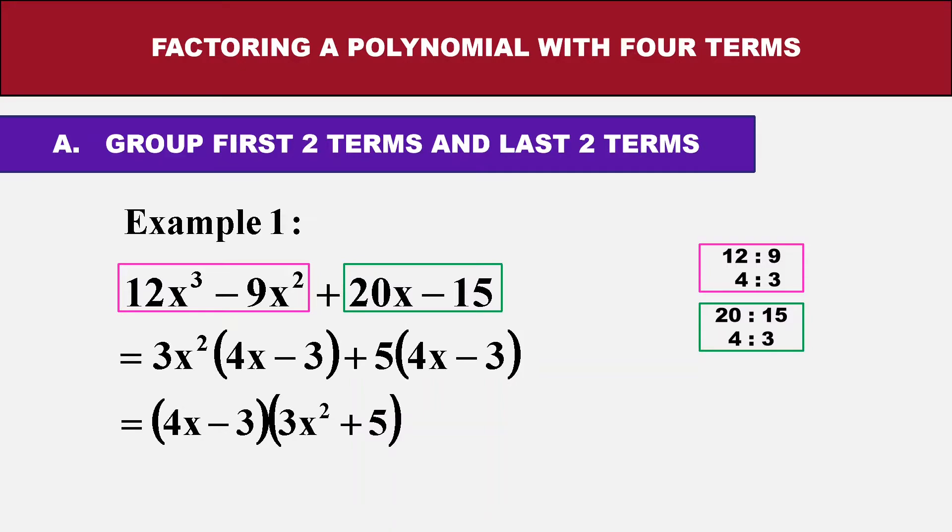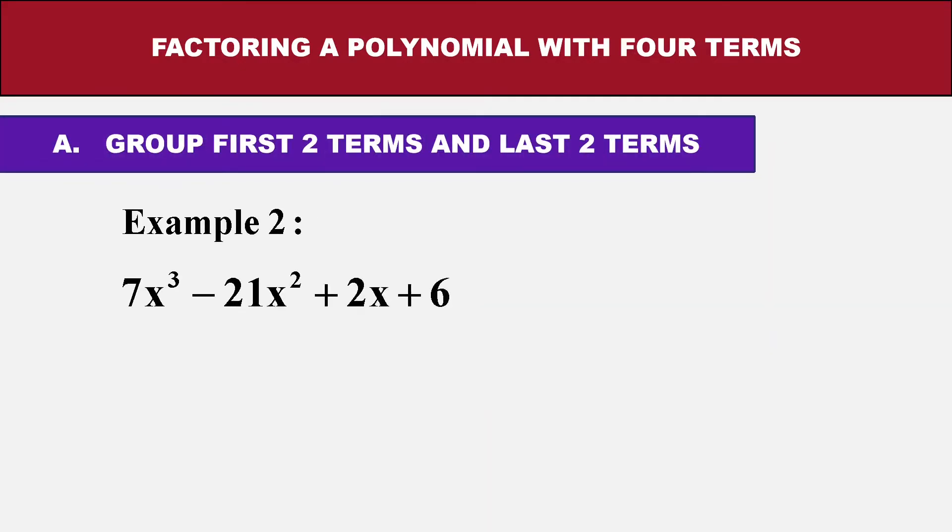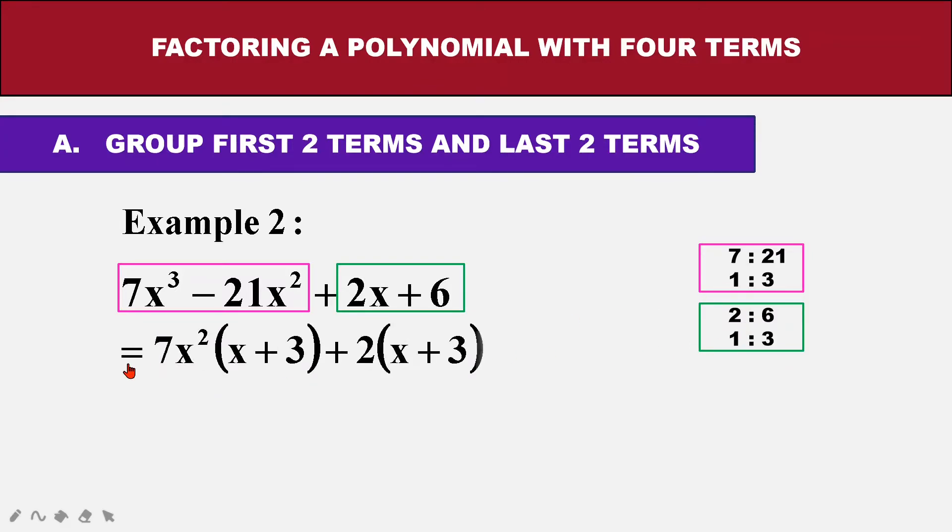Let's see this again since this is new to you. Again, I have 2 sets, the 2 sets of factors. The one in front, the first 2 terms, and the last one, the last 2 behind. Let's check the ratio. For the first 2 terms, I have 7 to 21 and I will get 1 to 3. And the second one, 2 to 6, the ratio is also 1 to 3. So now I know that the factors should have that ratio.